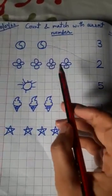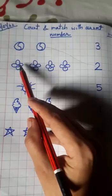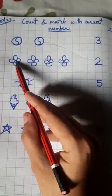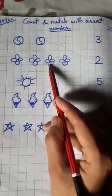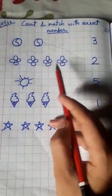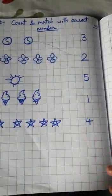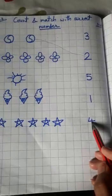Now look here, next is flowers. One, two, three, four - four flowers. So look, where is number four? Here.